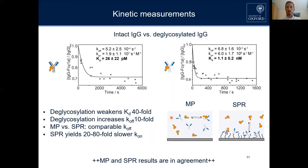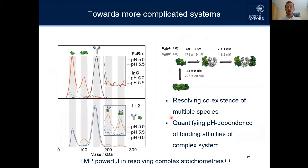We then tried to push it even further, where other techniques would really start to struggle. This is a complicated system because it has different species present that would be very difficult to resolve with any other technique. We have the IgG and the FcRn receptor — a different receptor — and from the literature it is well known that this interaction is highly pH dependent, and it is disputed whether FcRn binds as a monomer or a dimer.